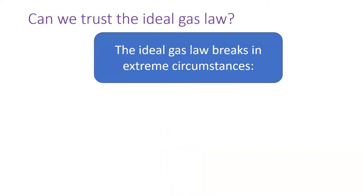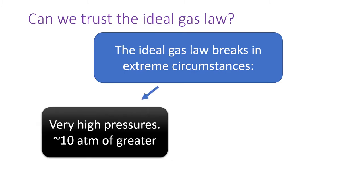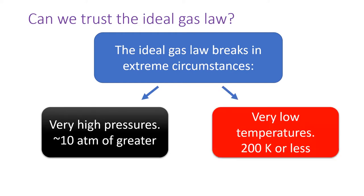So it's important to ask: when can we trust the ideal gas law? The ideal gas law breaks down at very high pressures because the volume of gas particles starts to become significant — in practice, at around 10 atmospheres of pressure or greater. It also breaks down at very low temperatures because the gases are moving so slowly that they can stick to each other — in practice, at around 200 Kelvin or less.